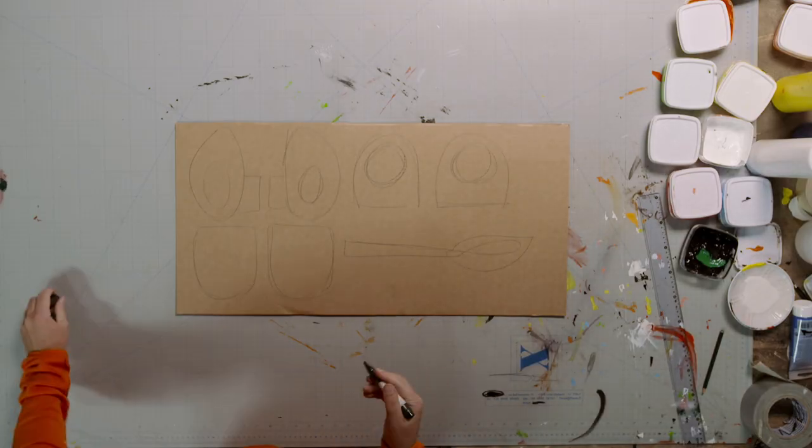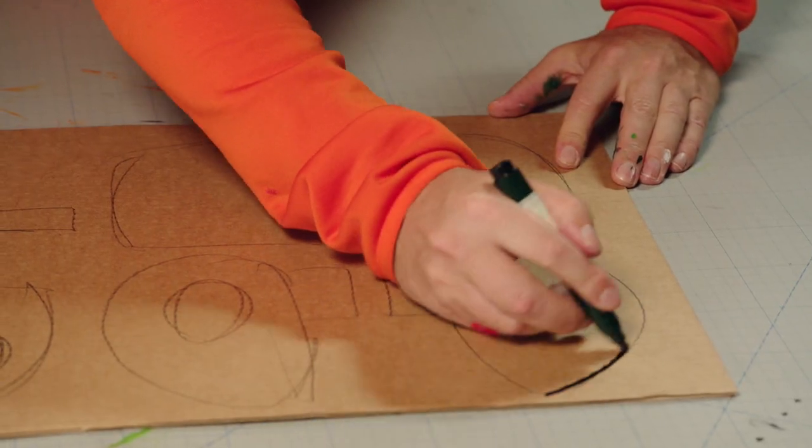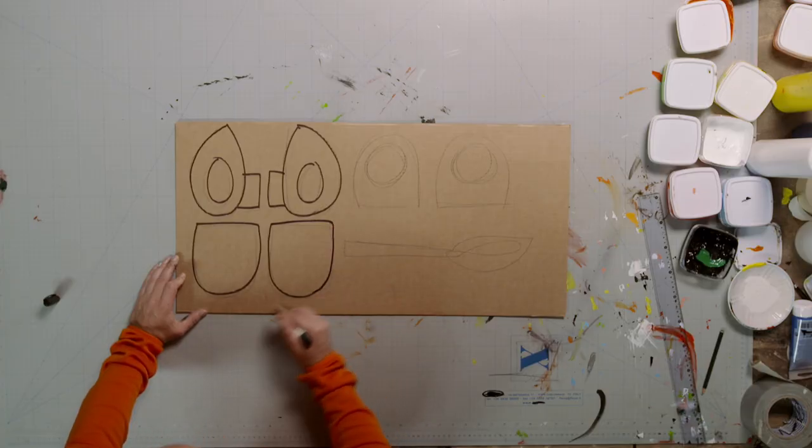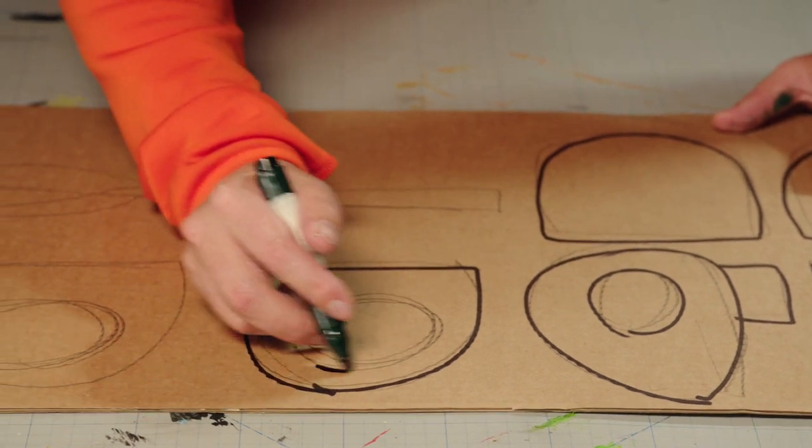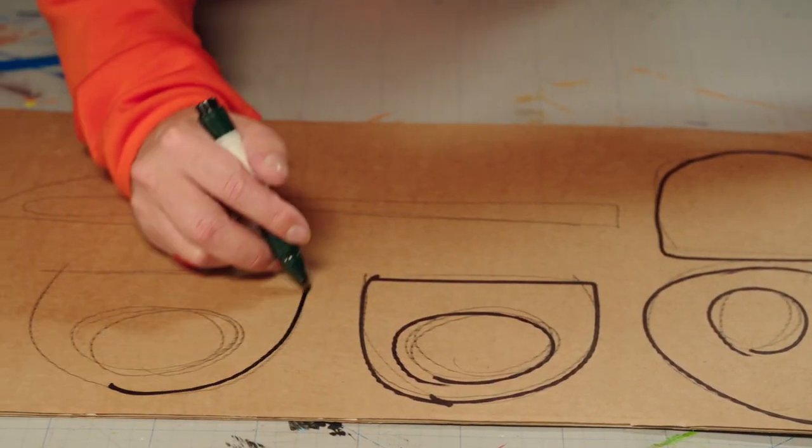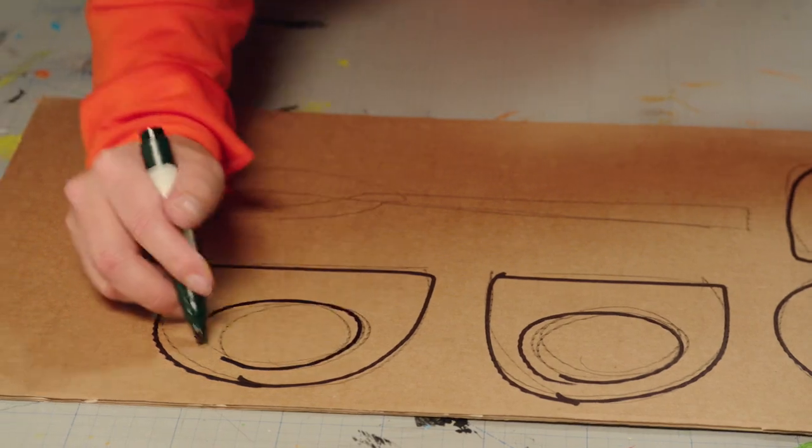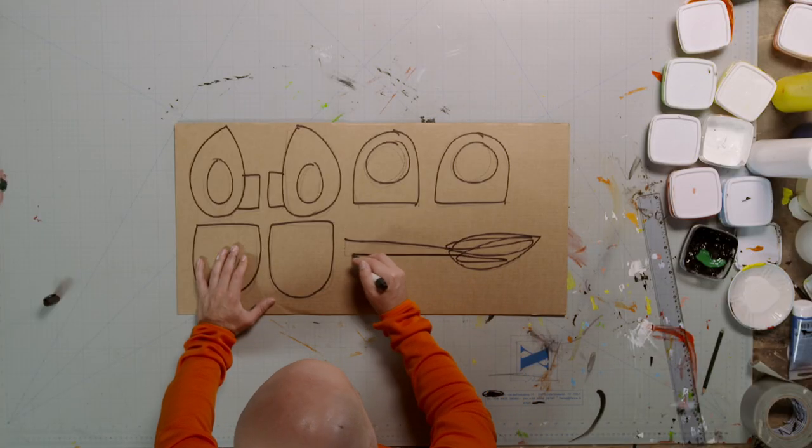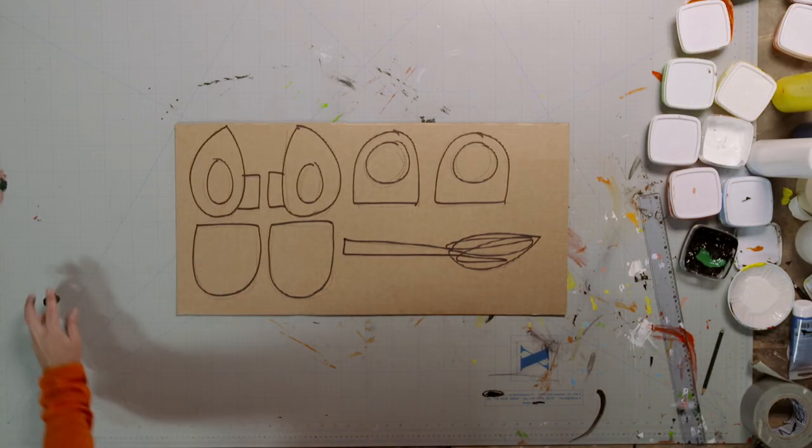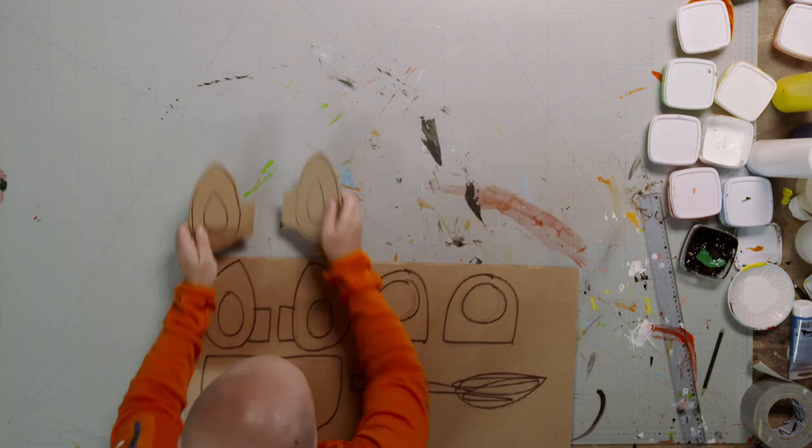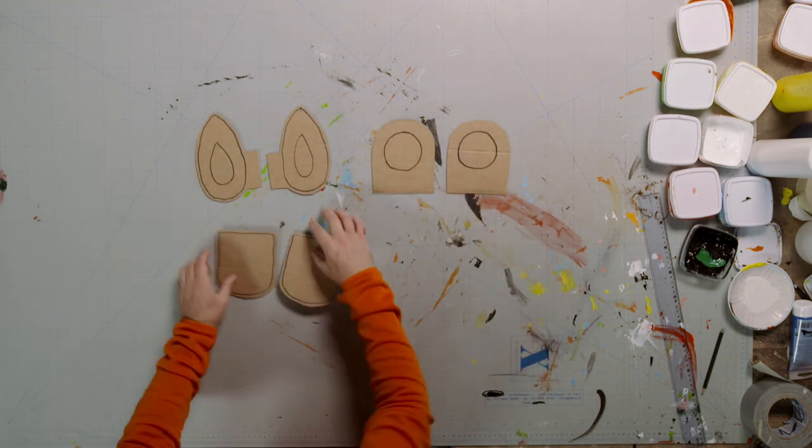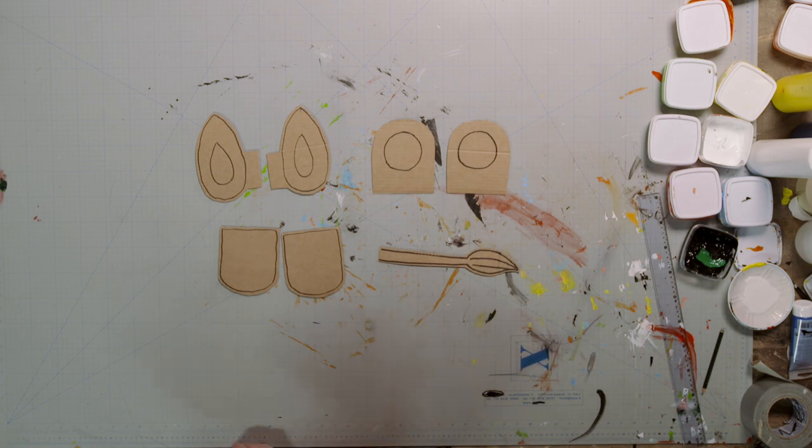Now, go over your pencil lines with a thick marker pen. And moving at light speed, I've got all the pieces cut out and ready to glue on.